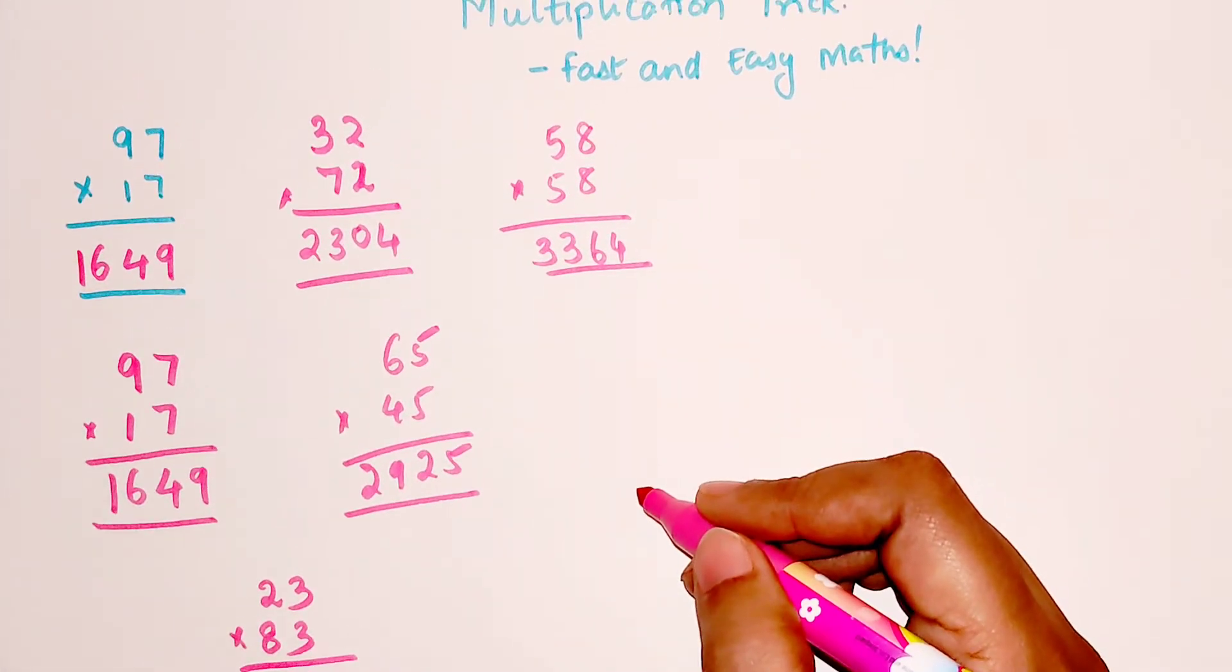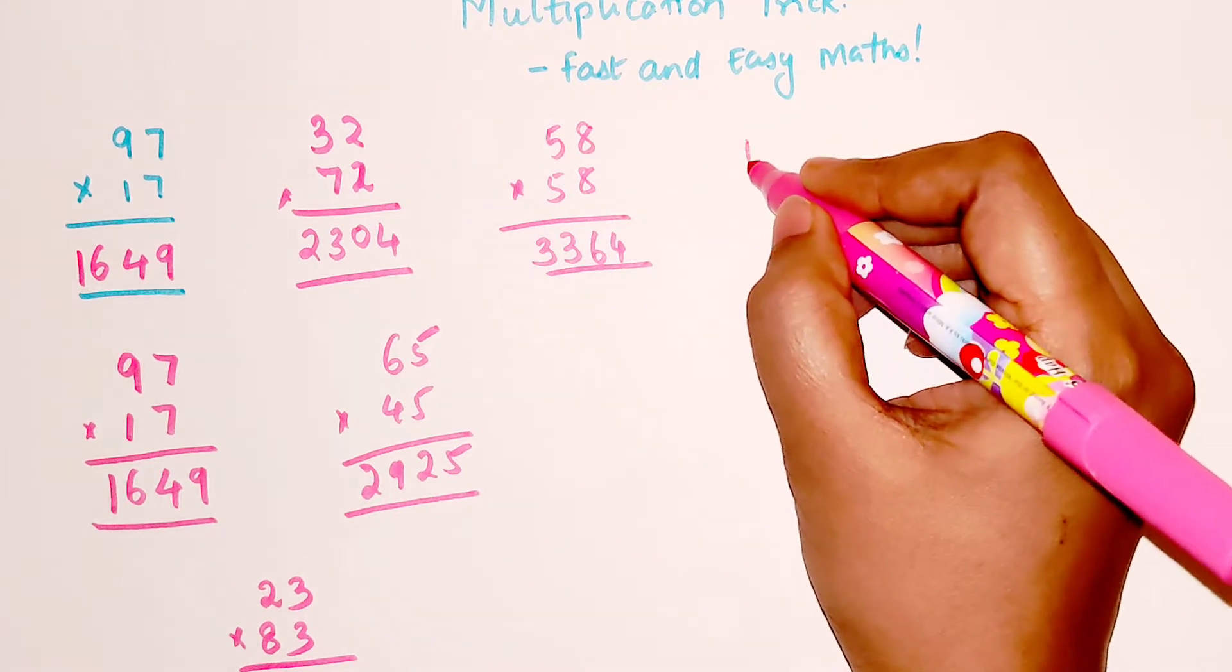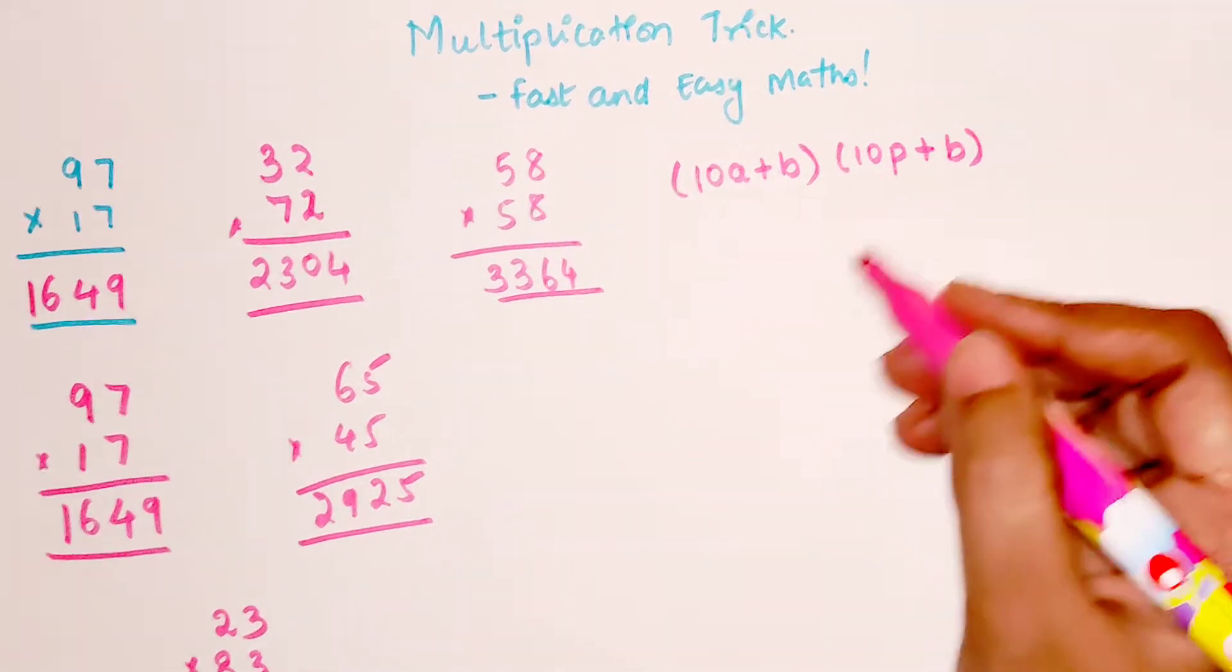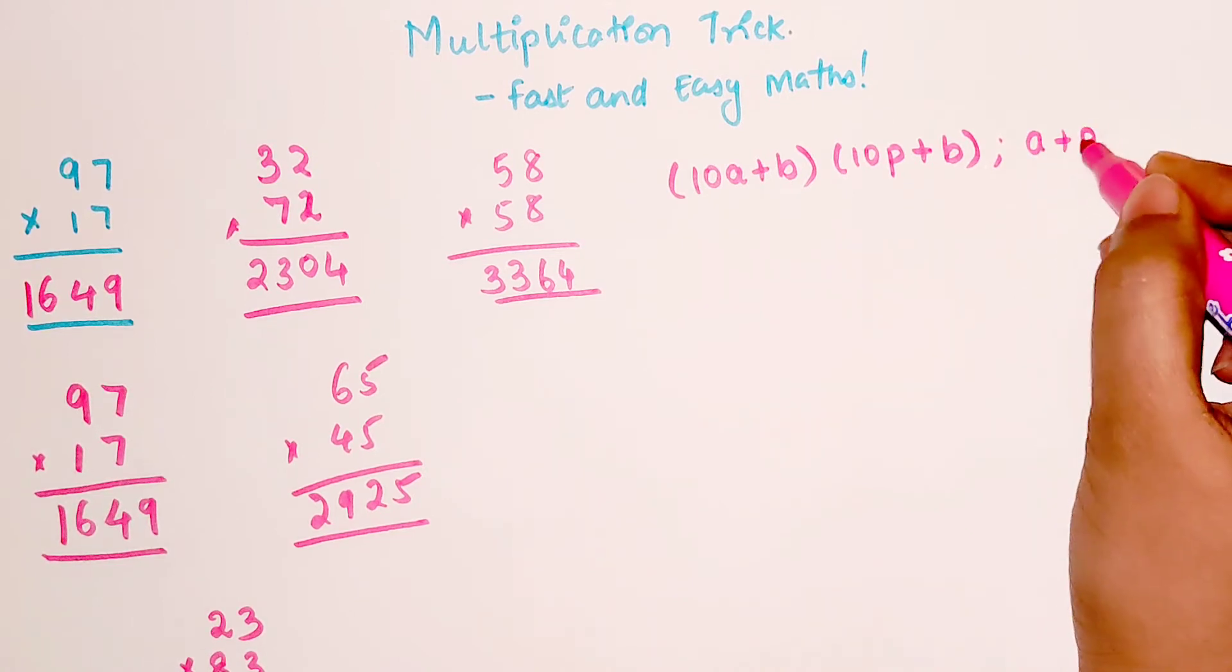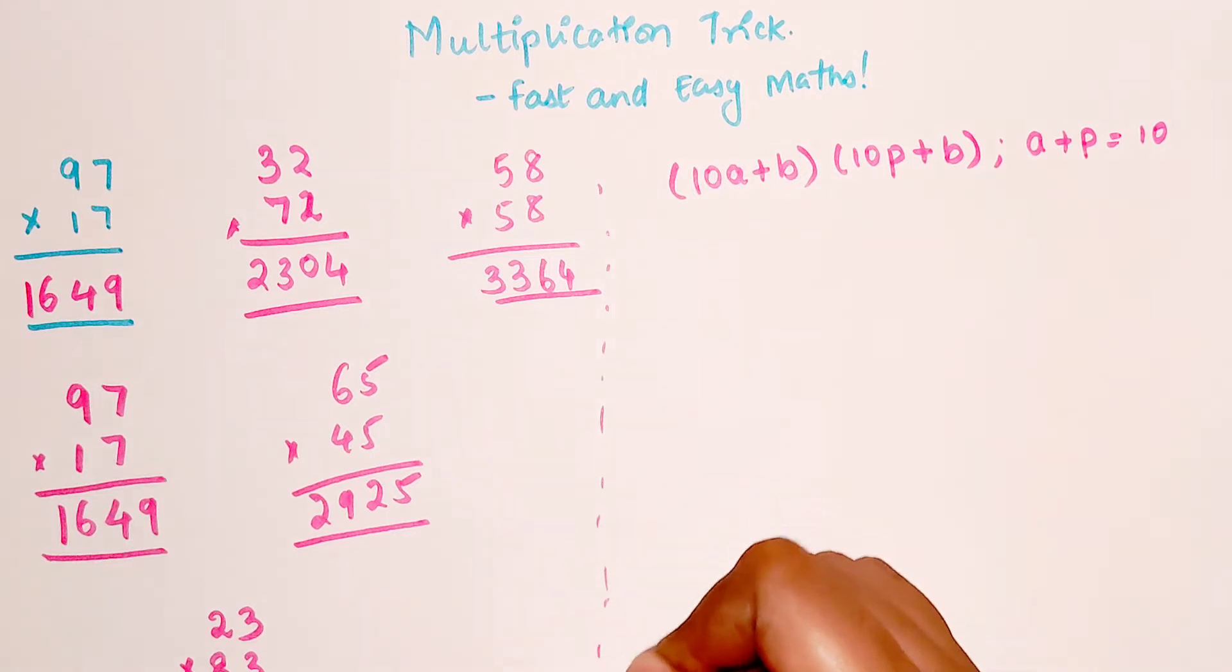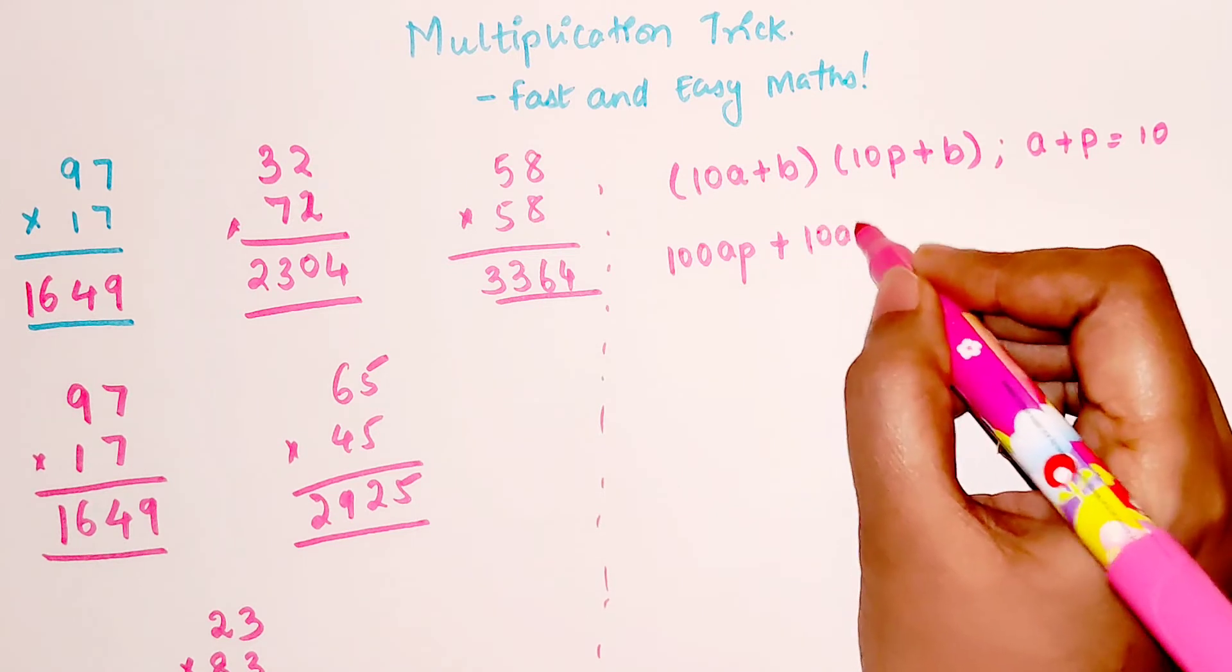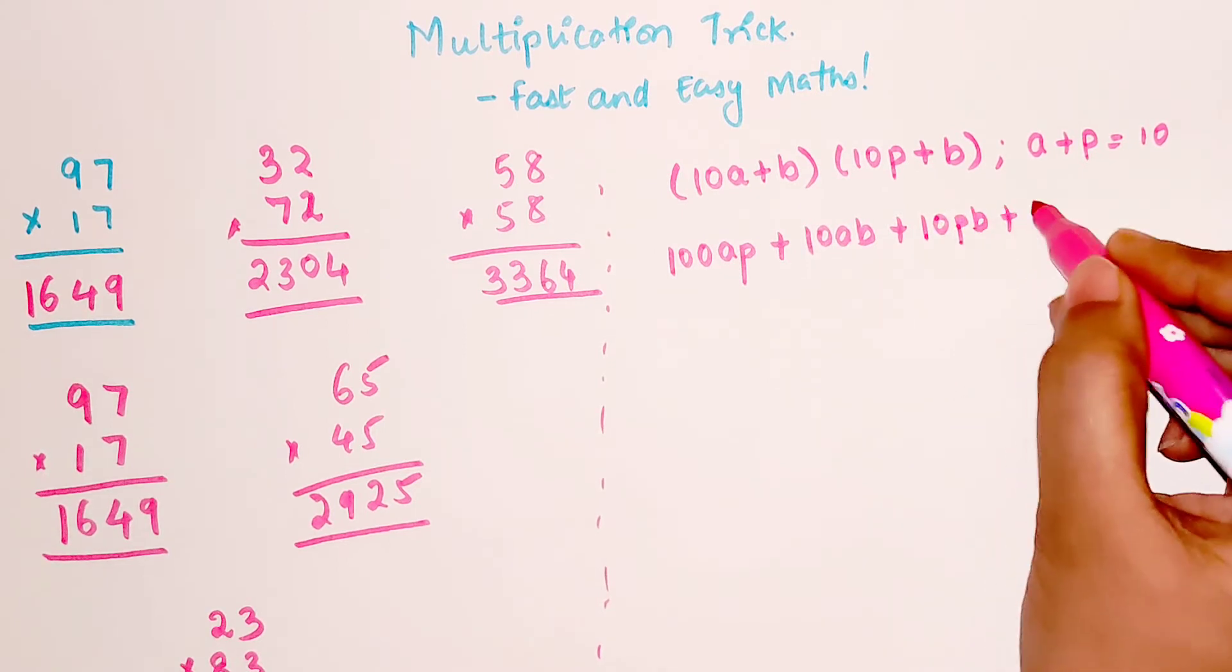Now let's very quickly understand how does this happen. I'm going to take my first multiplicand as 10a plus b and the next one can be 10p plus b, because the unit digit is same. And here the criteria is where a plus p gets you 10. Now let's expand this, so that's 100ap plus 10ab plus 10pb plus b squared.